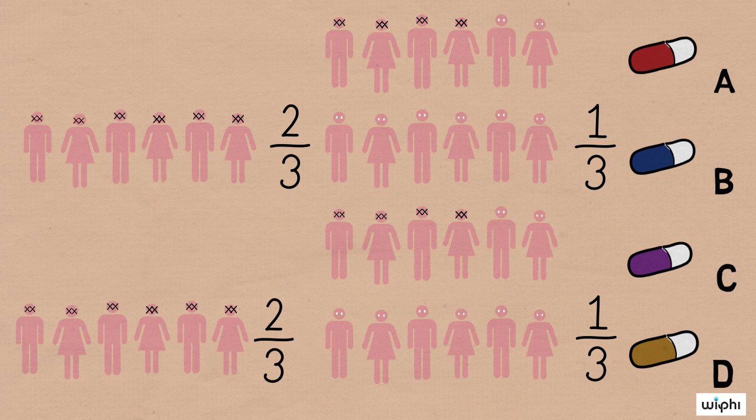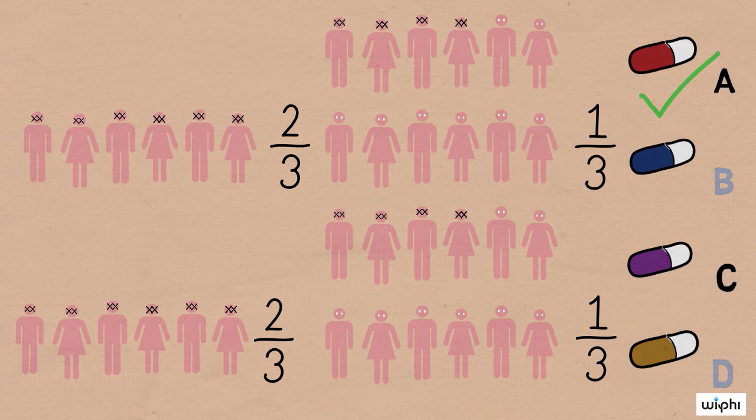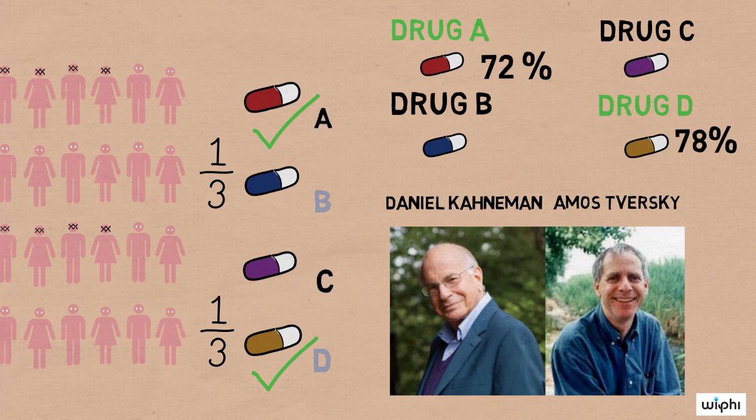We can argue about whether it's better to save 200 million people for sure, or to take a one-third chance of saving all of them, but one thing should be clear from the example. It's pretty weird for you to prefer drug A over B at the same time as you prefer drug D over C. After all, they're exactly the same drugs, with slightly different labels.